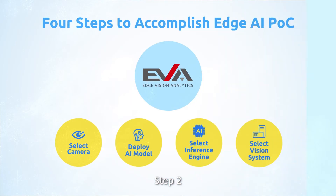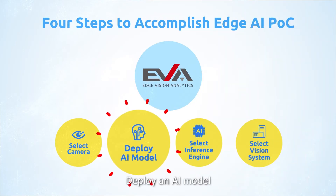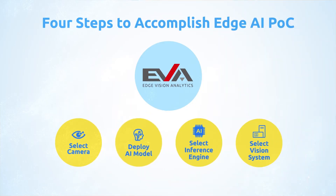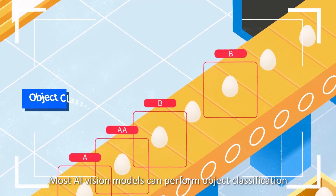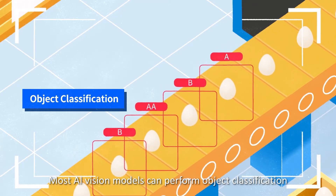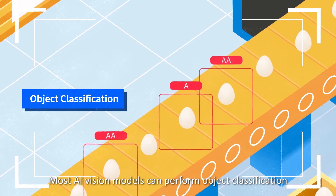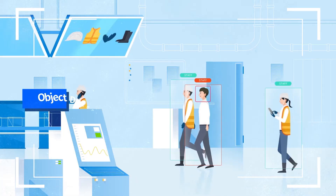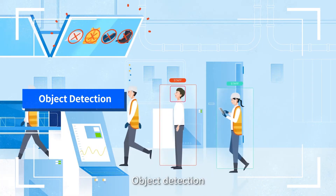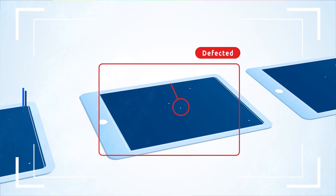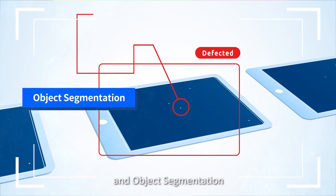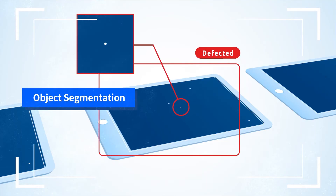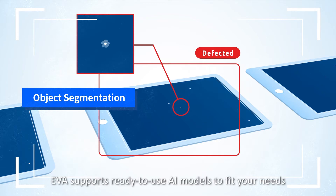Step 2: Deploy an AI model. Most AI vision models can perform object classification, object detection, and object segmentation. EVA supports ready-to-use AI models to fit your needs.